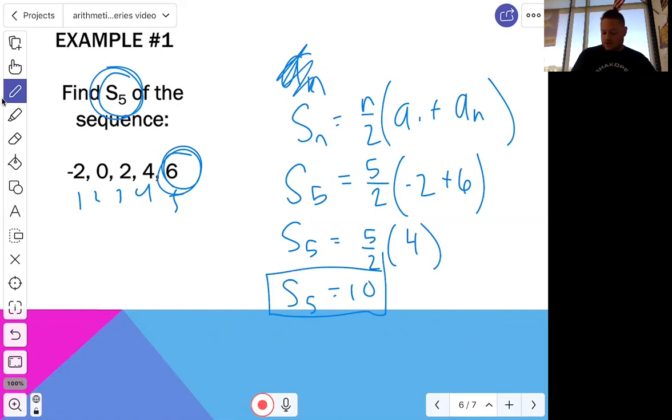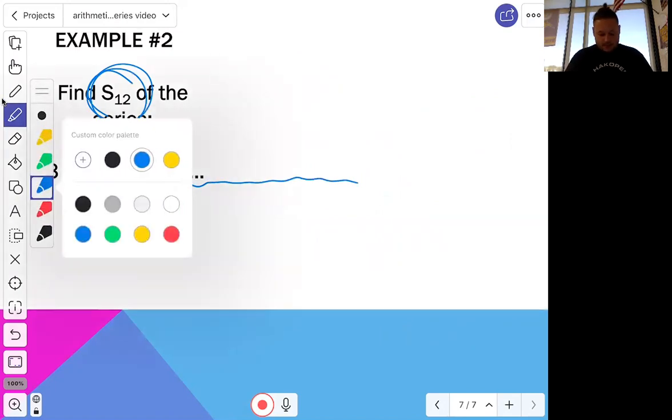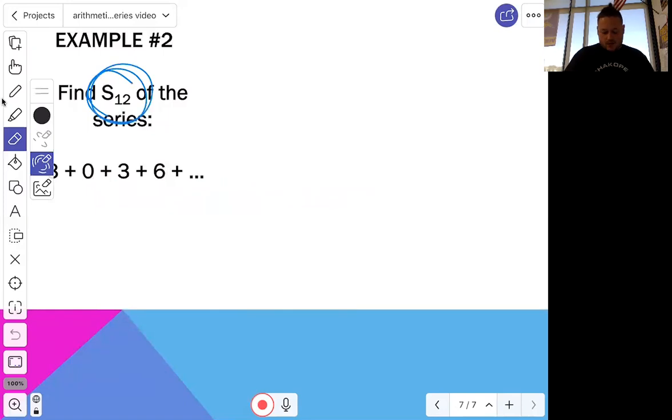Let's move on to a more difficult question. Something like this. Find S12 of the series. Basically, we want to find the sum of the first 12 terms. Now, notice you only have four terms here. If you want to, you could extend this out all the way to the 12th term and use that original formula. But that's not always going to work because I could ask you, if I wanted to be a jerk, I could ask you, find S50. Find the sum of the first 50 terms. And I'm not about to have y'all write out 50 terms here. That's a waste of time.